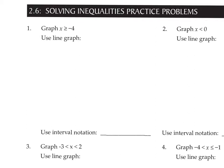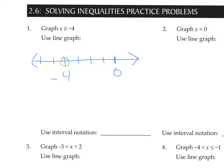Question number one says graph x is greater than or equal to negative 4 using a line graph. It's already solved for x, so you don't need to worry about solving for x. We're going to make a line graph. Negative 4 is the important number, so we're going to use a closed circle at negative 4, because this has the equal to bar on it — the point should be closed.